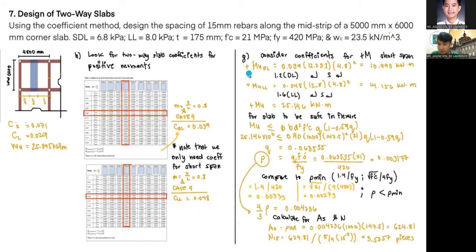Our next step is to consider coefficients for the positive short span. MuDL equals 0.039, which is CDL here, times 1.2DL, which is 12.321, and 4.8, which is S. Then MUL, 1.6LL, times CLL here, and 4.8 squared, giving us 25.0. For the slab to be safe in flexure, we'll use this formula to acquire the value of Q, and Q equals 0.063535. Then ρ equals 0.03177, and compare to the ρ min.